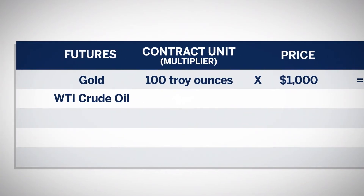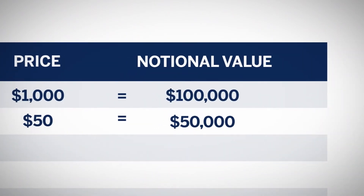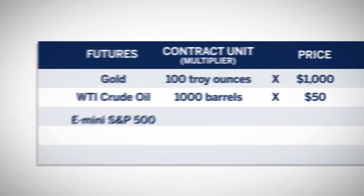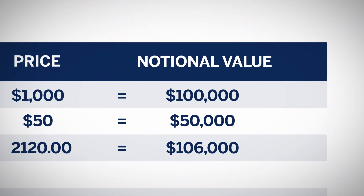If WTI Crude Oil is trading at $50 and the contract unit is 1,000 barrels, the notional would be $50 times 1,000, or $50,000. Now assume the E-mini S&P 500 Futures are trading at $2,120. The multiplier for this contract is $50. $50 multiplied by the contract price gives you a notional value of $106,000.